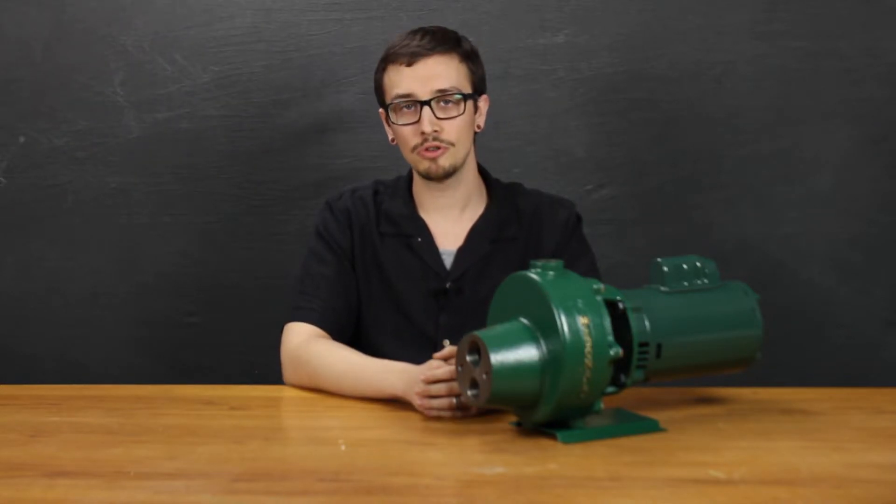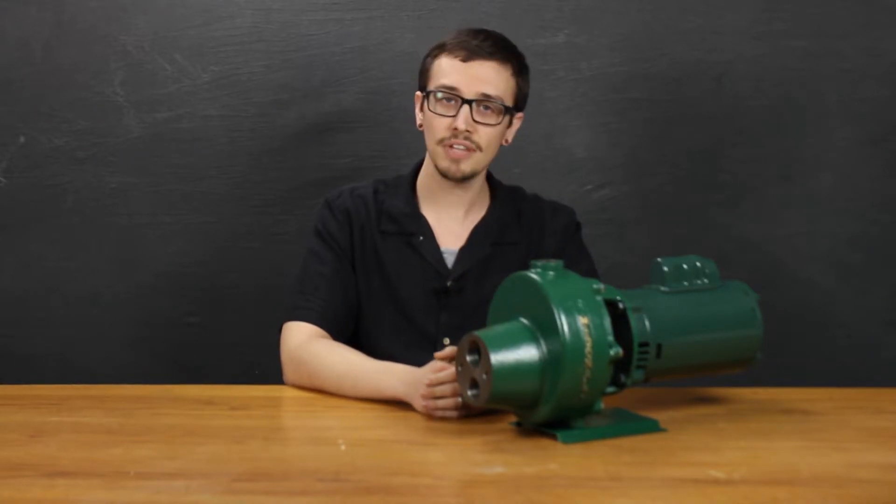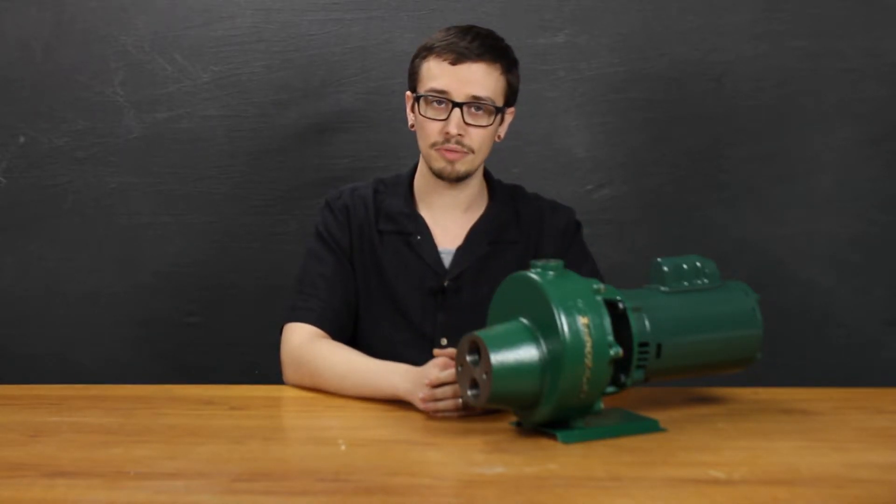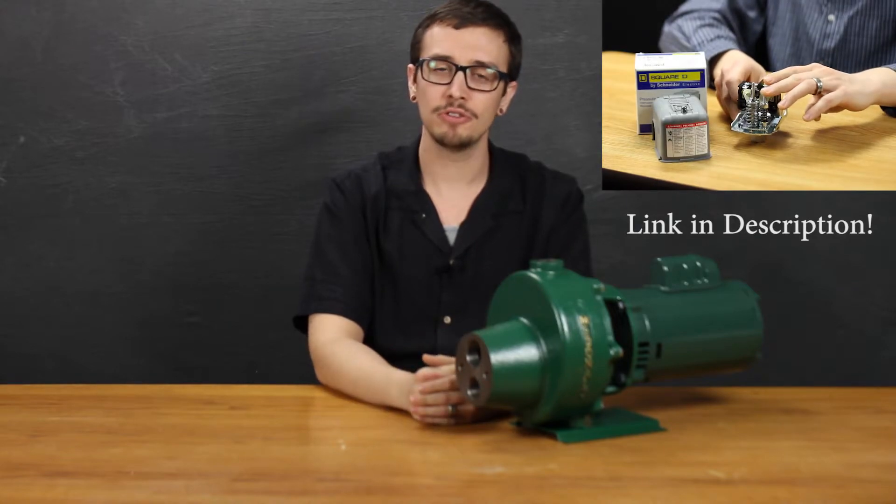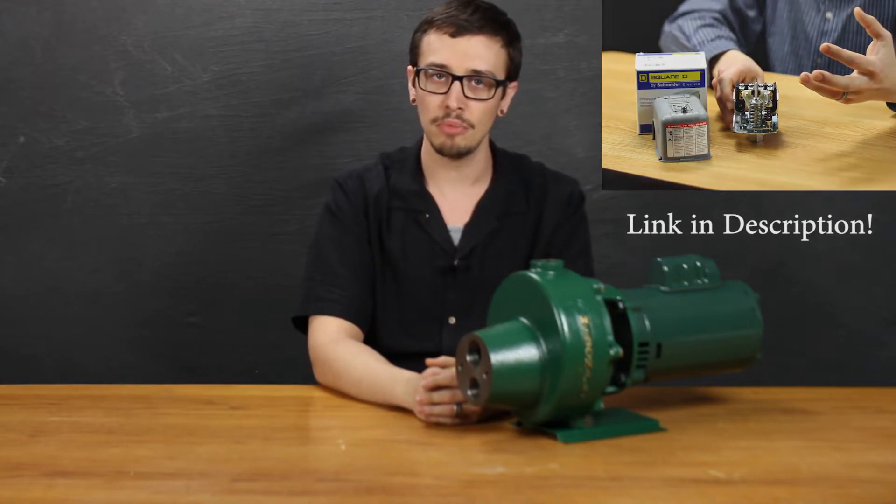The adjustable pressure switch on this pump has been factory set to 30/50 PSI and that is standard on all 1500 series pumps. If you have any questions on adjusting the pressure switch, we've done a video on that. Check in the description below.